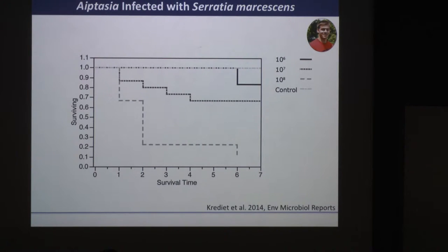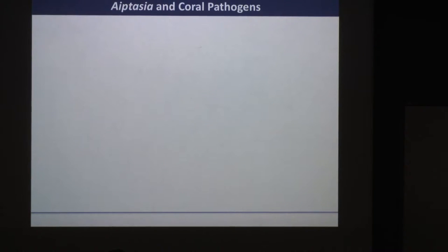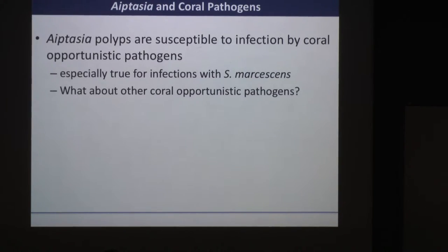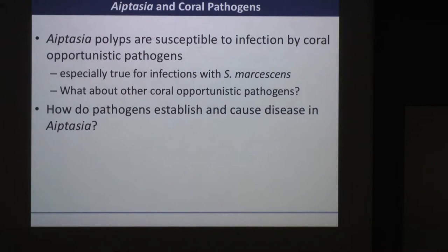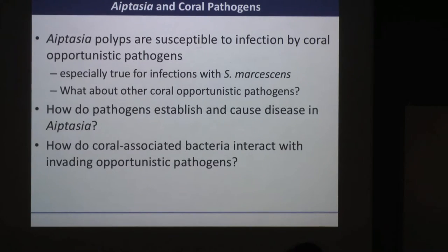This was a promising first step showing we get disease at the same level and see the same phenotype — a tissue necrotic disease. We then wanted to ask: how are the pathogens actually establishing on the surface of Aptasia and interacting with the bacteria that are normally there to start causing disease? And how are these coral-associated bacteria playing a role in potentially thwarting some of this infection and progression of invading pathogens?